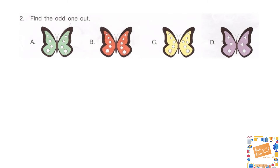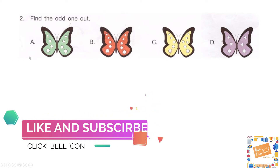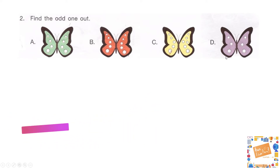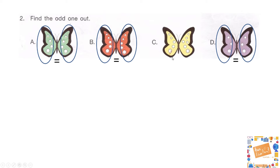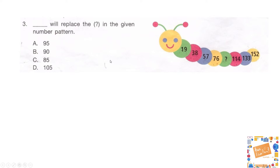The next question is: find the odd one out. If you look at this figure carefully you may get the correct answer, so why don't you try? Each butterfly has some dots on its wings — that's our clue. In option A the dots on both wings are equal; similarly in option B they have equal dots; in option D they also have equal dots. But in option C they don't have equal number of dots, so the correct answer is option C.